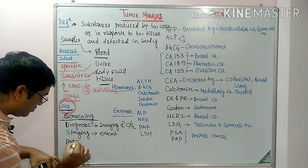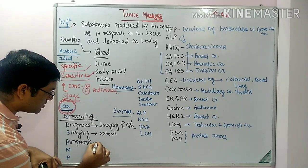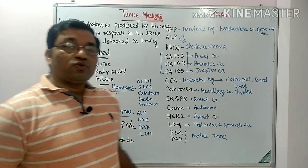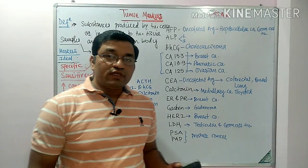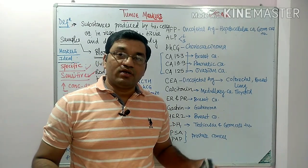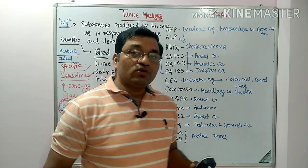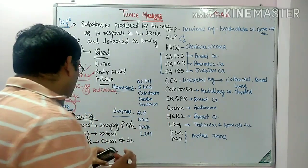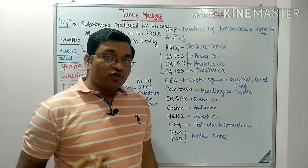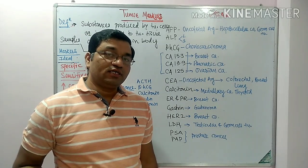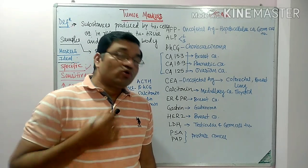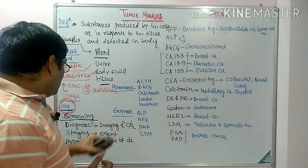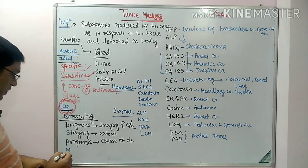The fourth use is prognosis. Prognosis means the course of disease — whether the patient will improve, worsen, or remain stable. It tells about the life expectancy of the patient. For example, carcinoembryonic antigen tells about the prognosis of colon cancer — the more the concentration, the worse the prognosis. So tumor markers are used for prognosis of the disease.